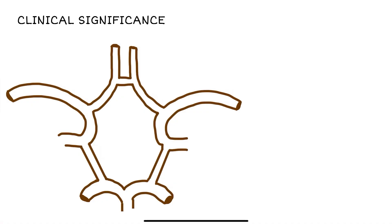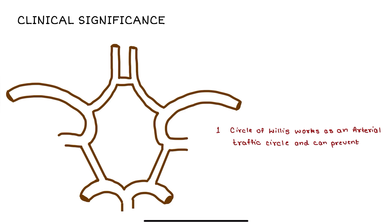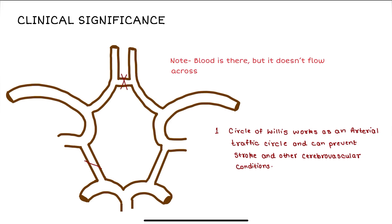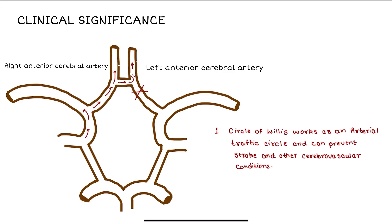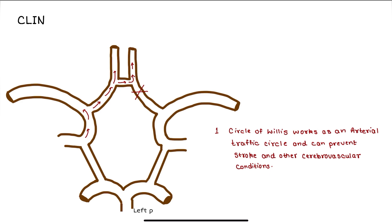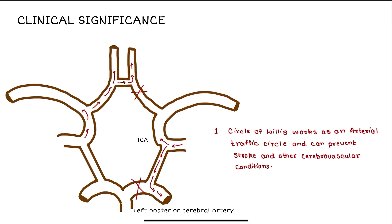Finally, the clinical significance of the Circle of Willis. First, it acts as an arterial traffic circle and can prevent conditions like stroke and other cerebrovascular conditions. Normally blood doesn't flow through the anterior and posterior communicating arteries, but if one of the major arteries gets blocked — for example, if the left anterior cerebral artery is blocked, blood can pass through the anterior communicating artery from the right anterior cerebral artery. Similarly, if the left posterior cerebral artery is blocked, blood can flow from the internal carotid artery through the posterior communicating artery.